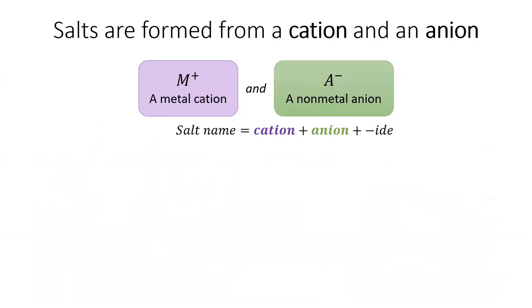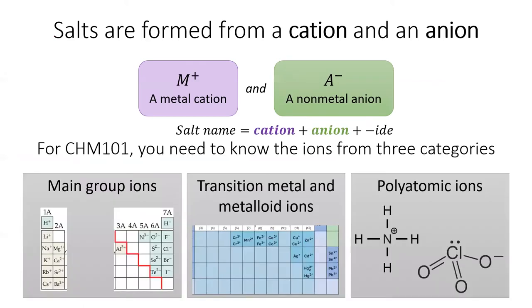Salts are formed from a cation and an anion. Generally, a salt's name will be two words: the cation, then the anion, ending in "-ide." There are three broad categories of ions with slightly different nomenclatures, and we'll go through them one at a time.